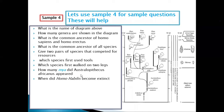When did Homo habilis become extinct? Locate Homo habilis, draw a line to the scale — it is around 1.5 million years ago. Remember to use a ruler; don't just estimate. The extinction point gives you the time in million years ago.